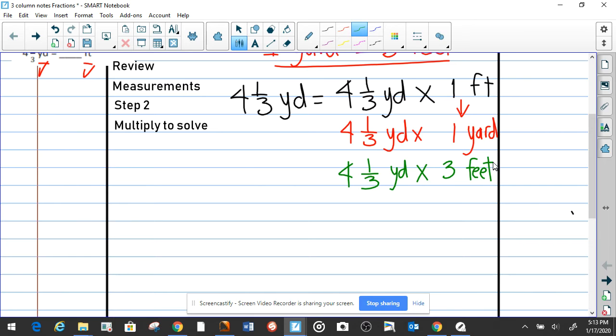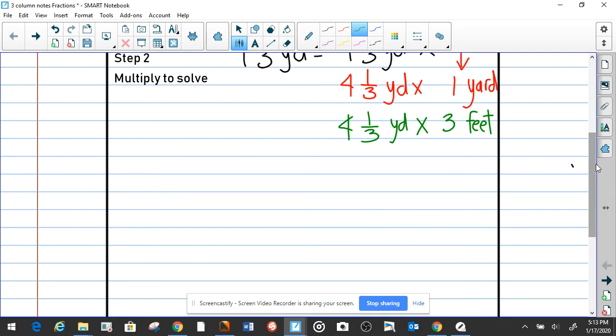So now we have a problem set up. Here is the nuance we have to keep in mind: we're going to convert this into an improper fraction. 4 and 1/3, how do you convert this? You multiply the 3 times the 4, and notice we're going in this circle this way, times the 4 plus the 1. When we do this multiplication, 3 times 4 equals 12 plus 1 equals 13.